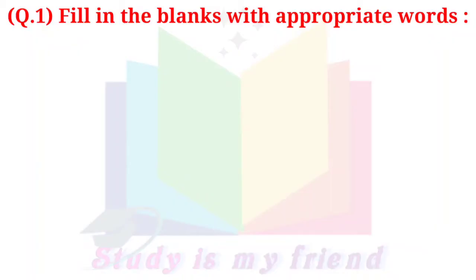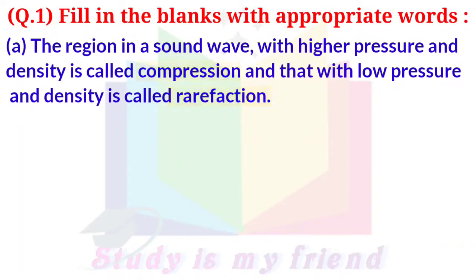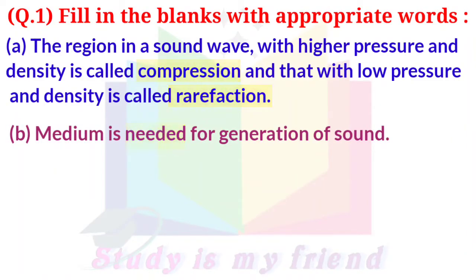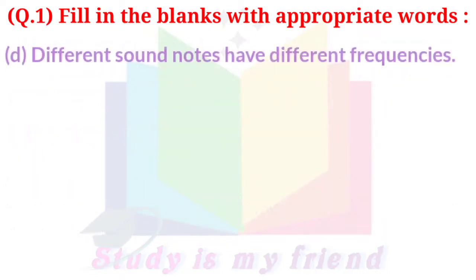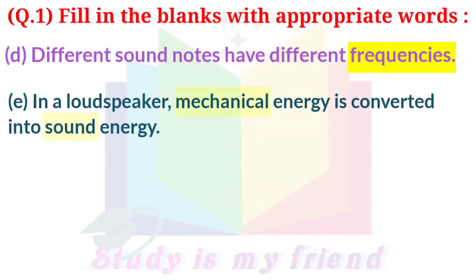Question 1. Fill in the blanks with appropriate words. A. The region in a sound wave with higher pressure and density is called compression, and that with low pressure and density is called rarefaction. B. Medium is needed for generation of sound. C. The total number of compressions and rarefactions produced per second in a sound wave is 1000; the frequency of the sound wave is 500 Hz. D. Different sound notes have different frequencies. E. In a loudspeaker, mechanical energy is converted into sound energy.